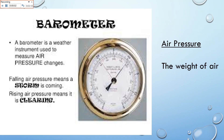Here is a barometer. A barometer is a weather instrument that is used to measure air pressure changes. Air pressure is the weight of the air. Falling air pressure means that a storm is coming. Rising air pressure means that it's clear or the weather is clearing.